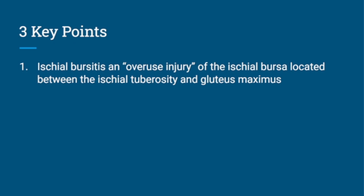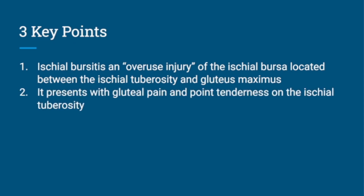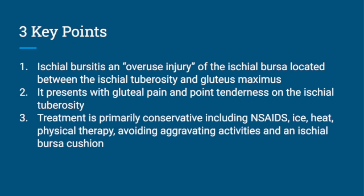Three key points of ischial bursitis: it's an overuse injury of the ischial bursa located between the ischial tuberosity and gluteus maximus. It presents with gluteal pain and point tenderness on the ischial tuberosity. Treatment is generally conservative, including NSAIDs, ice, heat, and physical therapy, avoiding aggravating activities, and an ischial bursa cushion.